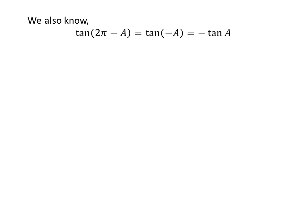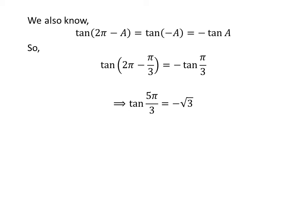We know the value of tangent of x repeats after the interval of 2 times pi, so tangent of 2 times pi minus a is equal to tangent of minus a. We also know the identity tangent of minus a is equal to minus tangent of a. Applying these identities, we get tangent of 5 times pi upon 3 is equal to minus square root of 3.